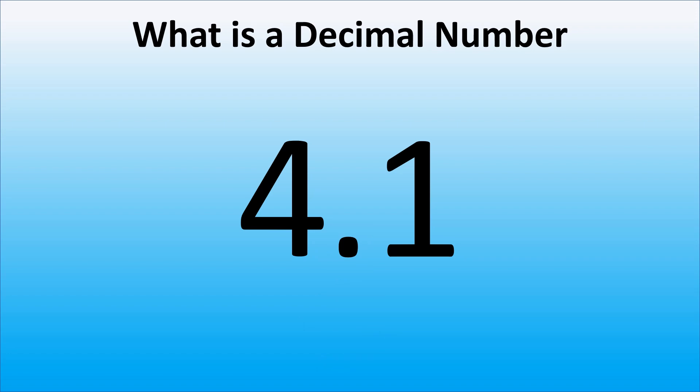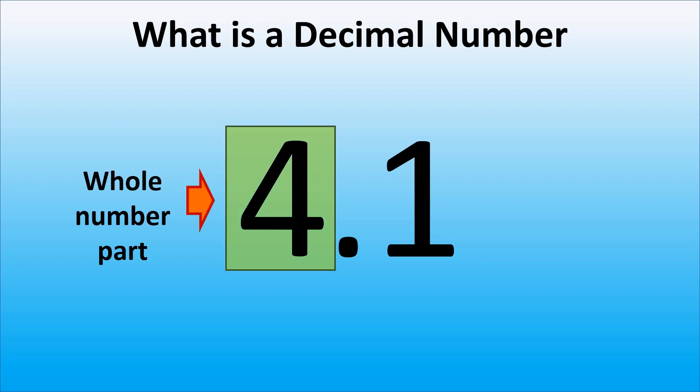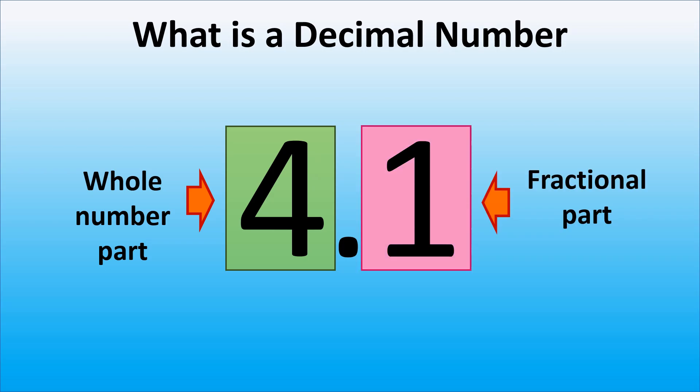Each decimal number has two parts. The first part is called the whole number part, and those are the digits to the left of the decimal point. The whole number part tells us the number of wholes. Here we have four whole parts. The second part is called a fractional part, or decimal part. We will call it a fractional part in this video. A fractional part is the digits to the right of a decimal point, and it represents a fraction.